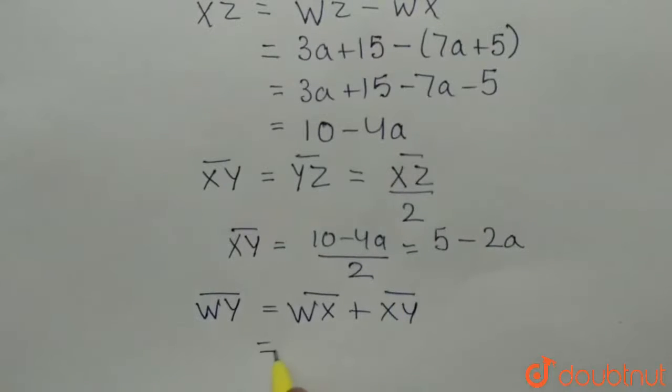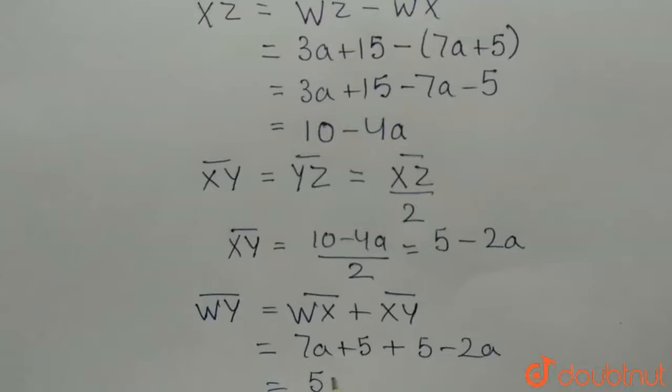WX is 7a plus 5 and XY is 5 minus 2a. We get 5a plus 10.